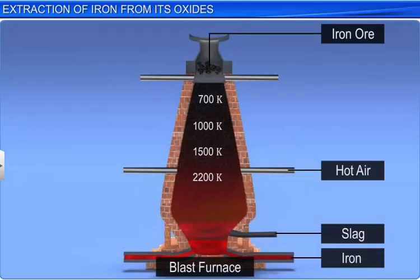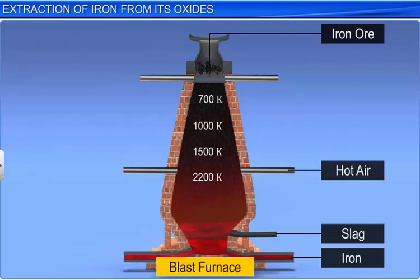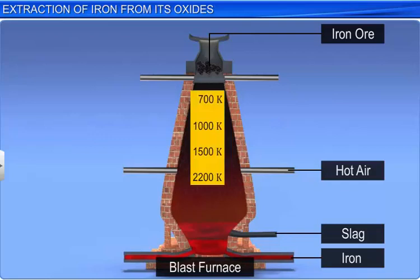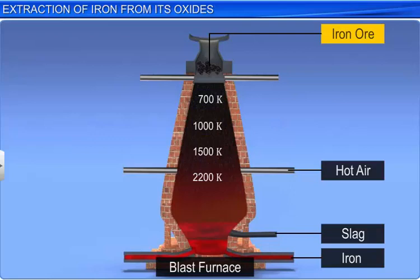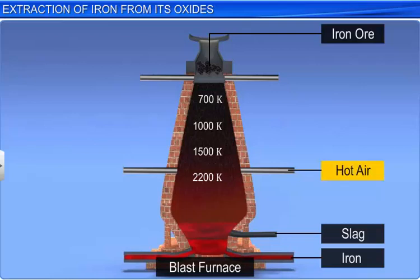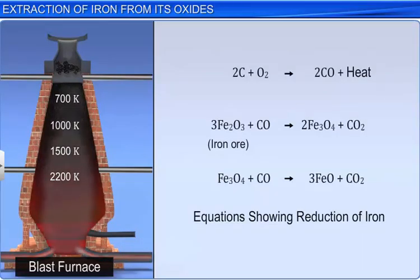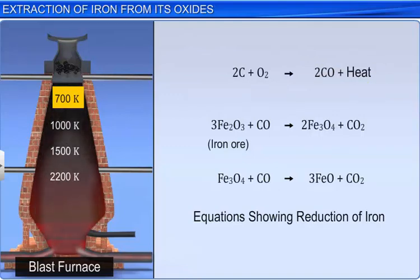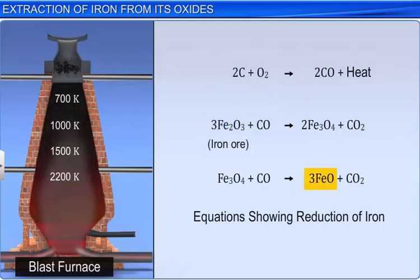Let us apply this concept to the extraction of iron in a blast furnace. In the furnace, iron oxide is reduced at different temperatures. Iron oxide ore is introduced into the furnace from the top. At the same time, coke is burnt in the lower portion of the furnace, blowing hot air to produce a temperature of 2200 Kelvin. When the coke burns, it produces carbon monoxide and the heat required for the process. The heat produced moves upwards along with the carbon monoxide. The temperature at the top of the furnace is lower, and hence iron oxides like Fe₃O₄ and Fe₂O₃ get reduced to FeO in different stages. This corresponds to the intersection points in the curves which we just discussed.